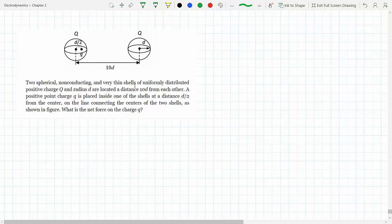Two spherical non-conducting and very thin shells of uniformly distributed positive charge Q and radius d are located a distance 10d from each other. So we have two shells, and the charge is distributed on them. If you apply Gauss's law—let's continue reading the question then we'll discuss it.